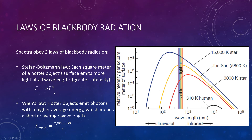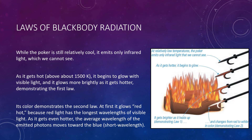Because thermal radiation spectra depend only on temperature, we can use them to measure the temperatures of distant objects — in many cases simply from the object's color. At human body temperatures of about 310 degrees Kelvin, people emit mostly in the infrared and emit no visible light, which explains why we don't glow in the dark. A relatively cool star with a 3,000 degree Kelvin surface emits mostly red light — that is why stars like Betelgeuse in Orion and Antares in Scorpius appear reddish.